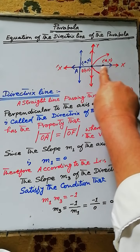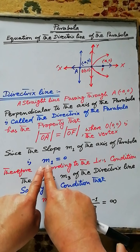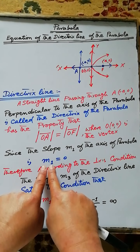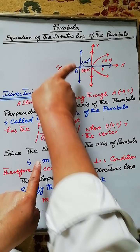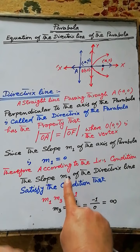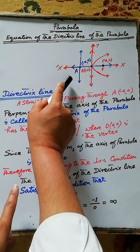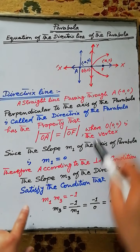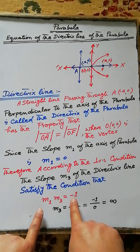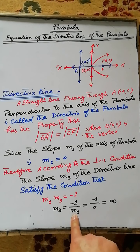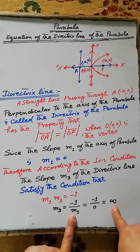The axis of the parabola is parallel to the x-axis, therefore the slope of the axis of the parabola is m1 = 0. Since the directrix of the parabola is perpendicular to the axis, if m3 is the slope of the directrix line, then according to the perpendicular condition the product of m1 and m3 equals -1, so m3 = -1/m1. Since m1 = 0, m3 is undefined.